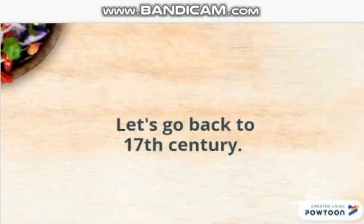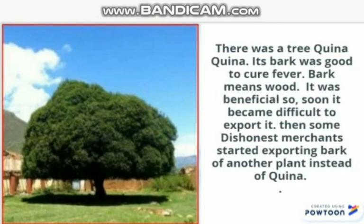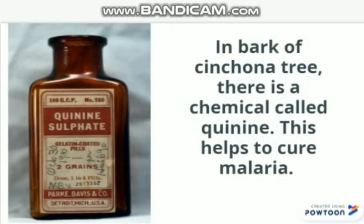In the 17th century, plants were exported from America to Europe to make medicines. There was a tree called quina quina whose bark was good to cure fever. It was so beneficial that it became difficult to export it. Then some dishonest merchants started exporting another plant — cinchona — instead. This dishonesty proved to be useful, as the bark of cinchona started curing malaria. In the bark of cinchona there is a chemical known as quinine, which helped to cure malaria.